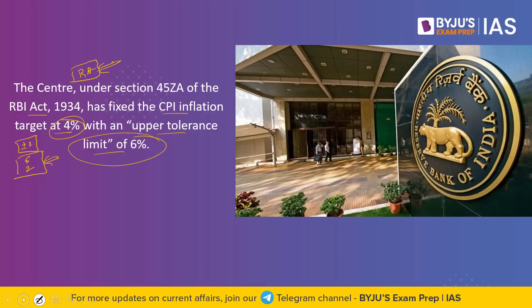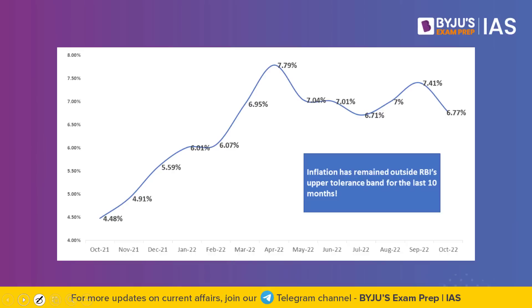It is in this backdrop that we will understand how the RBI is planning to control inflation. India's headline inflation rate fell to a 3-month low of 6.7 percent for the month of October. It was about 7.4 percent in previous months on a favorable base, but it is still above the central bank's upper limit of 6 percent — meaning it is not within the target bracket.